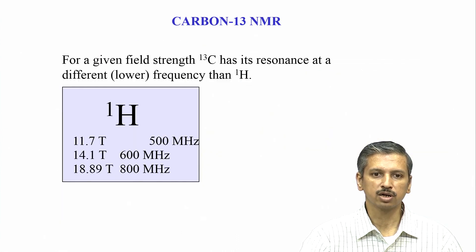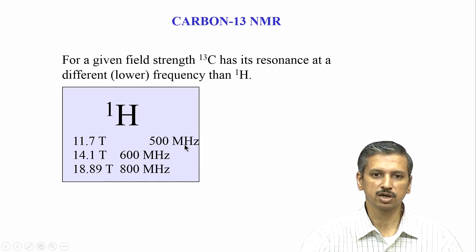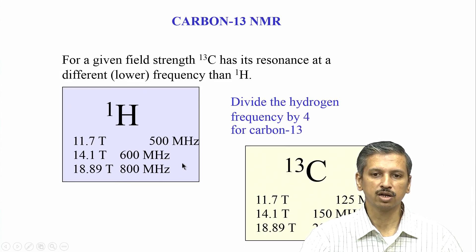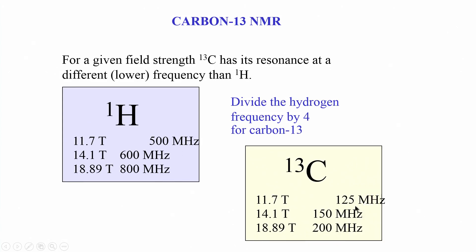Carbon-13 resonates at different frequencies depending on the magnetic field, calculated using omega equals gamma times B0. Since carbon's gyromagnetic ratio is 4 times less than proton, its frequency is 4 times less. For a 500 MHz spectrometer, carbon-13 resonates at 125 MHz; for 600 MHz, at 150 MHz; for 800 MHz, at 200 MHz. The proton frequency is divided by 4 to obtain the carbon-13 frequency.